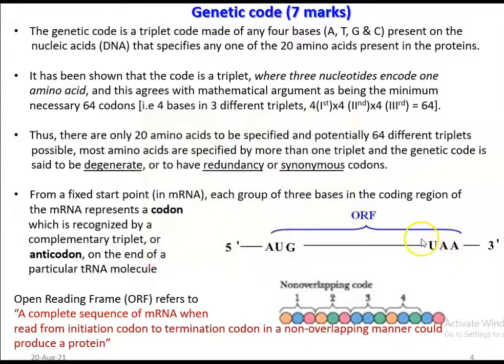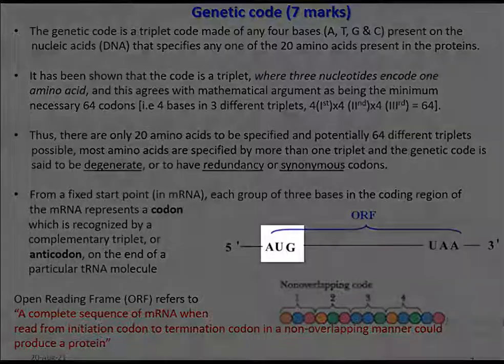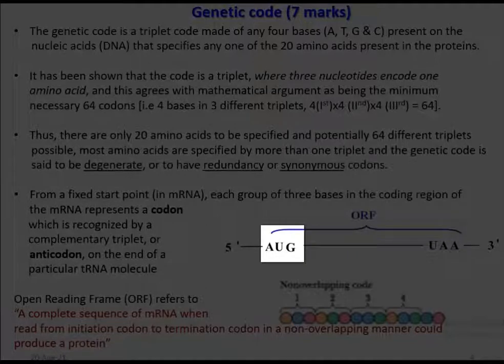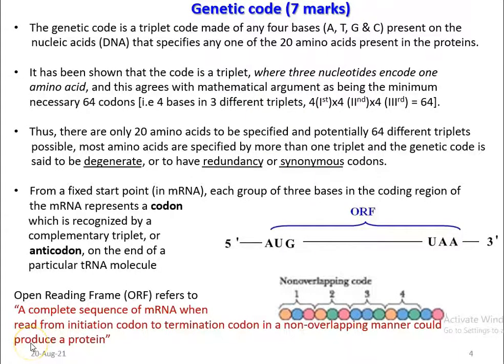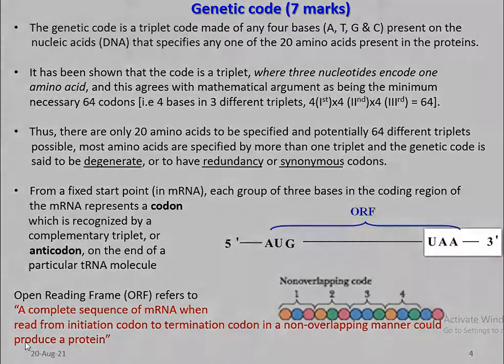Now we look at the points related to ORF — Open Reading Frame. It refers to a complete sequence of an mRNA when read from an initiation codon. The initiation codon refers to a codon made up of A, U, G, which codes for methionine or formyl-methionine and acts as the initiation codon in the translation process. Apart from that, other codons present code for one or more amino acids, and finally a termination codon is present.